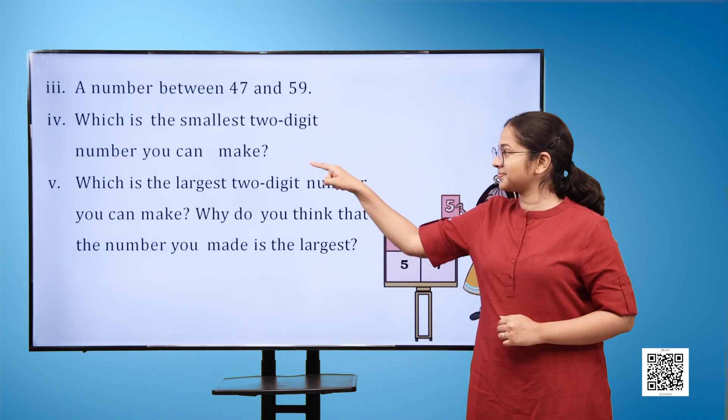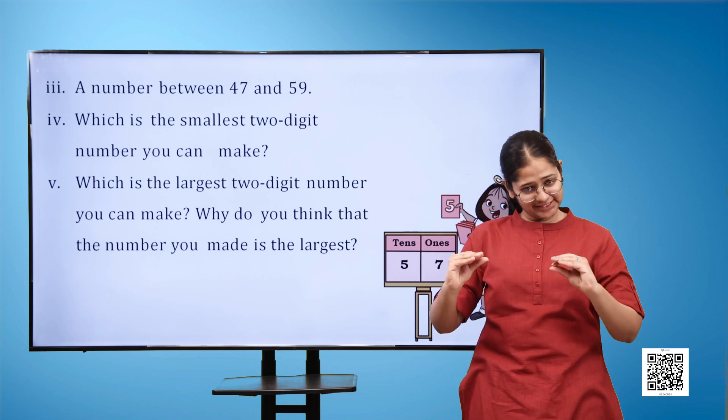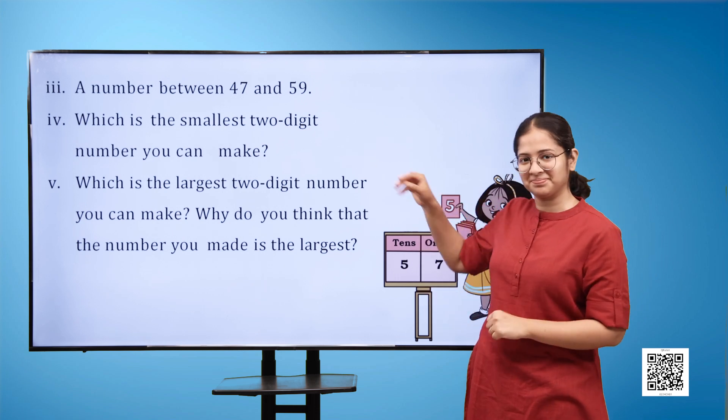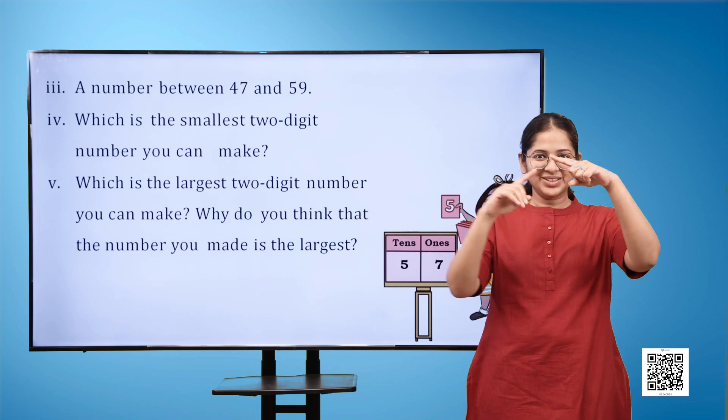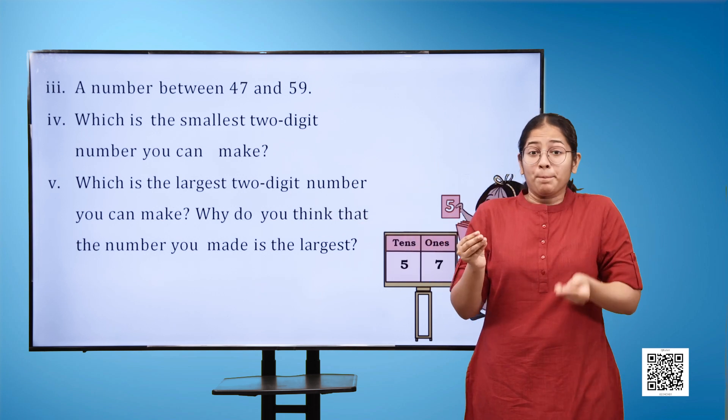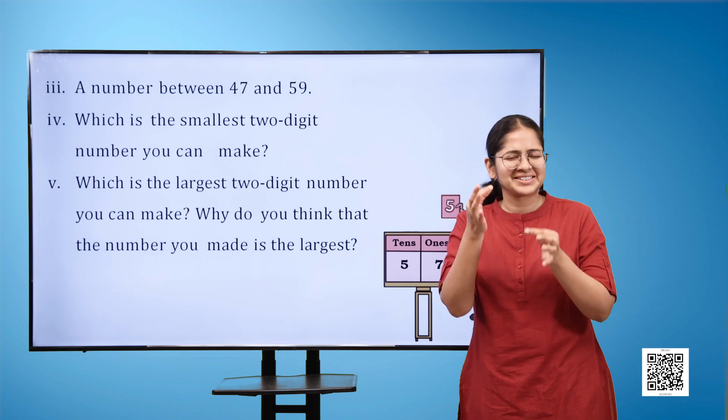4. Which is the smallest two-digit number you can make? 5. Which is the largest two-digit number you can make? Why do you think that the number you made is the largest?